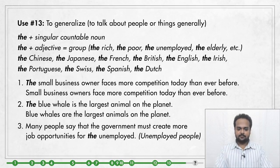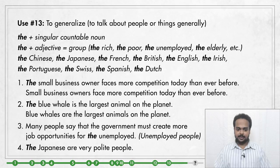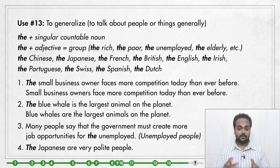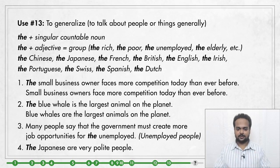We also use the same form to refer to certain nationalities. For example: 'The Japanese are very polite people.' When I say 'the Japanese' I'm referring to the Japanese people, not the Japanese language. The same applies to all the other nationalities shown on screen.